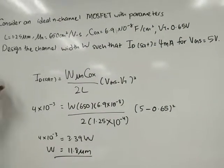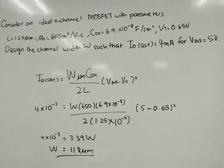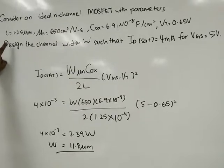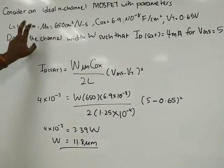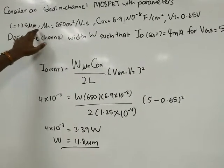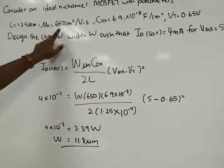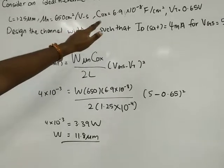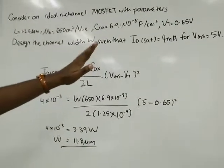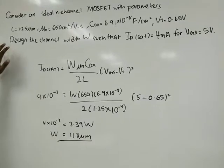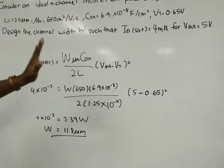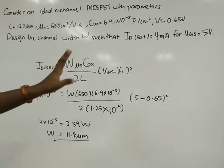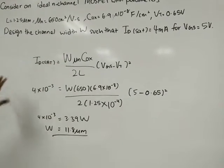Consider an ideal N-channel MOSFET with parameters: length L = 1.25 μm, μn = 650 cm²/Vs, COX = 6.9×10⁻⁸ F/cm², VT = 0.65V. Design the channel width such that the saturation current is 4 milliampere for gate voltage of 5 volts.